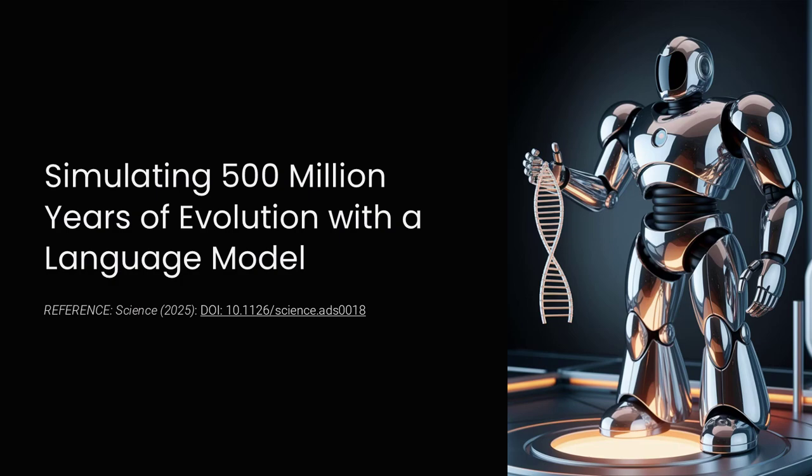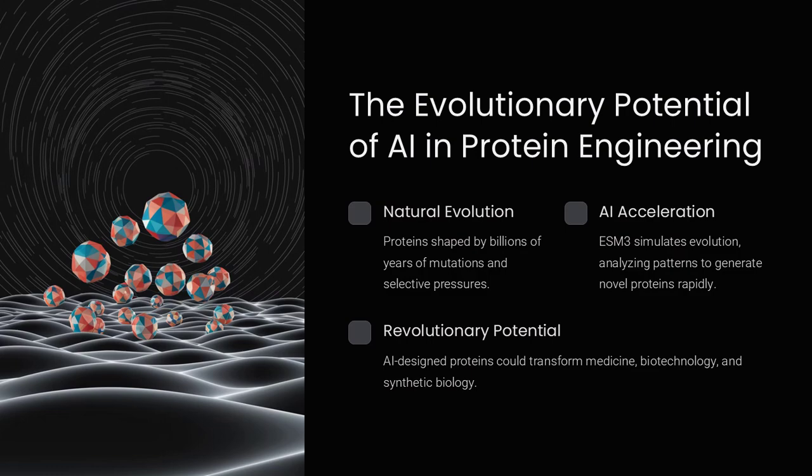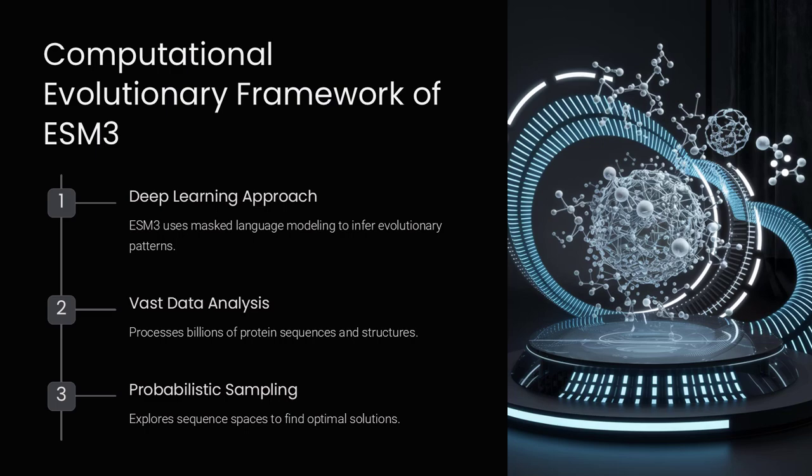Imagine if we could compress half a billion years of evolution into a single experiment. That is exactly what scientists have achieved using ESM3, an advanced AI language model trained to simulate the evolution of proteins.